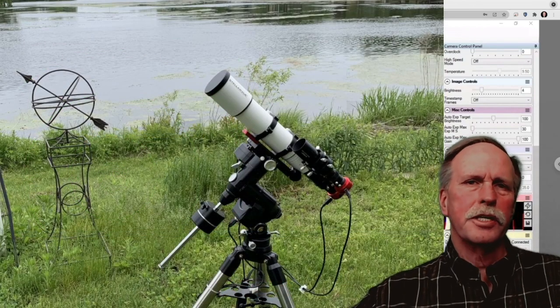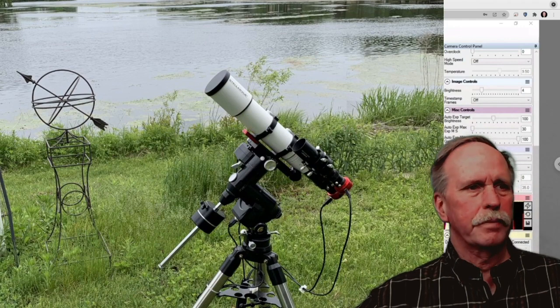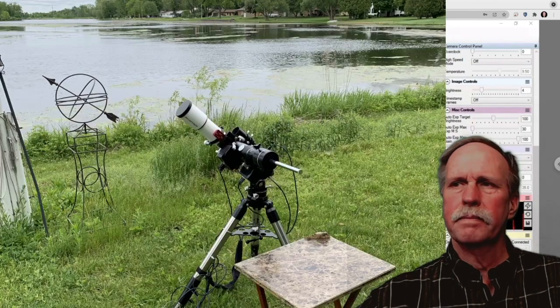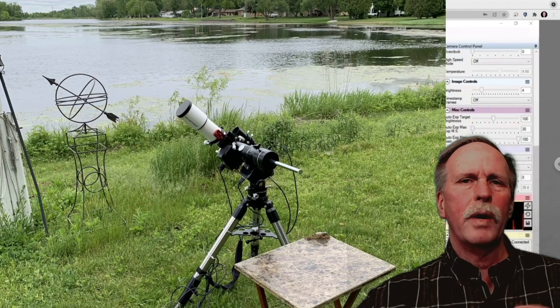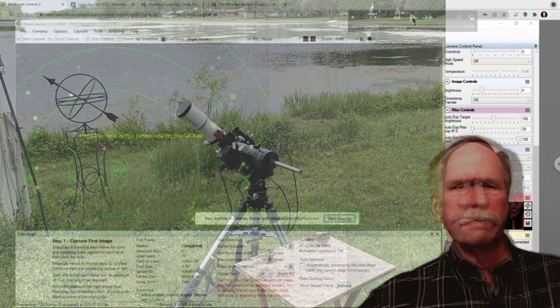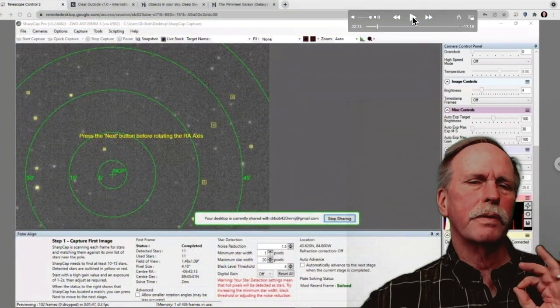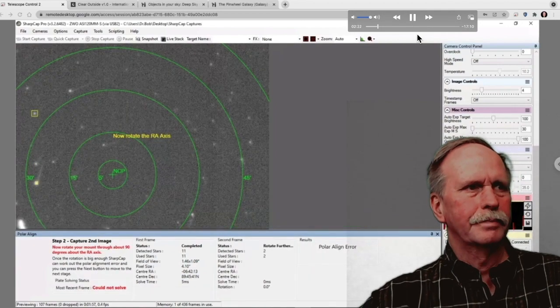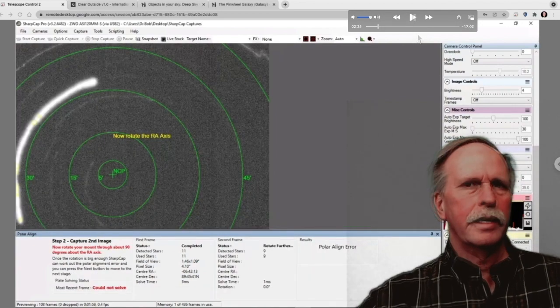Now as you recall the telescope was initially in polar home position. When you hit next you need to rotate the telescope 90 degrees. Now what happens when you do that is you create a star trail. So I'm out at the telescope right now and I'm going to rotate it 90 degrees just as I showed you in the picture.